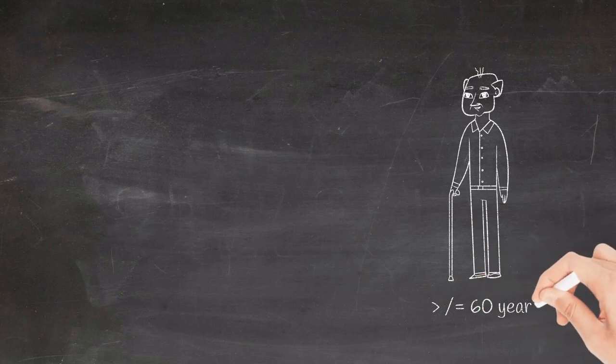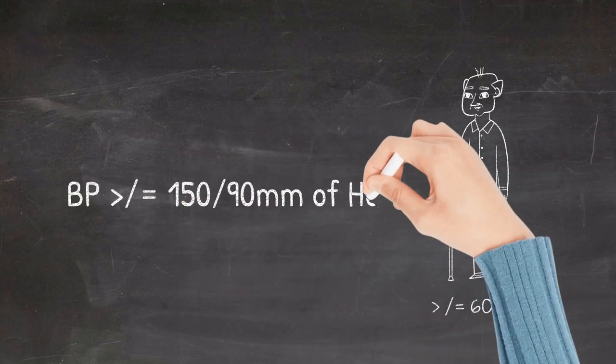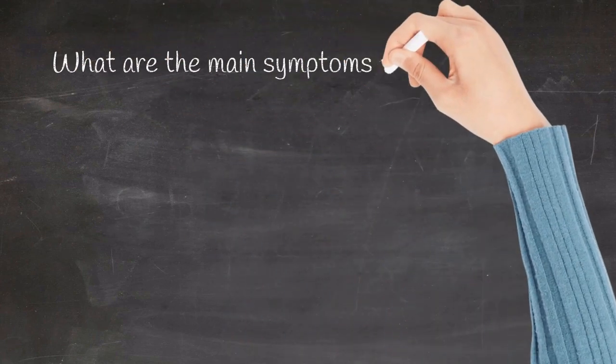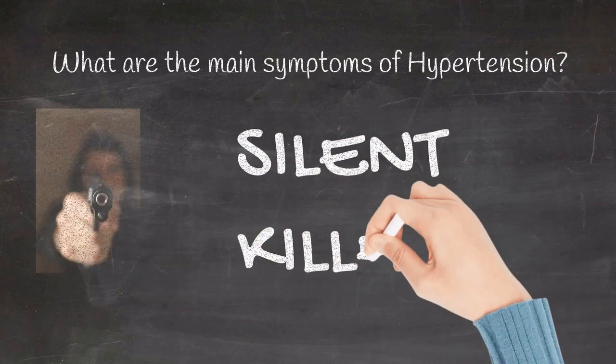So how do you diagnose hypertension clinically? Let's see what are the main symptoms of hypertension. Hypertension is a silent killer - that means it is mostly asymptomatic unless and until it presents as an end organ damage.